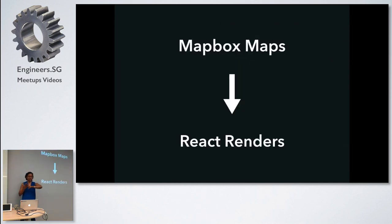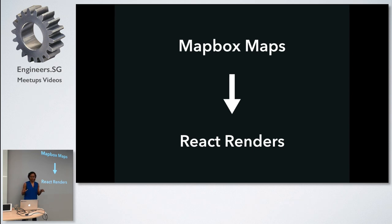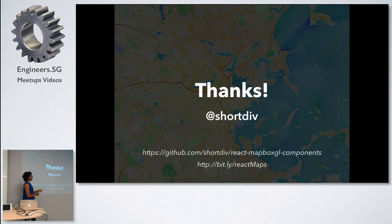Mapbox and React work really well together: Mapbox is great at mapping, and React is great at extrapolating components, managing state, and handling things in a modular fashion. There are libraries like React Mapbox GL that let you write maps using React without rolling your own. But a key takeaway is that it's actually really fun to create your own, even if you're reinventing the wheel, because you get to learn a lot about a library's ins and outs and intricacies.